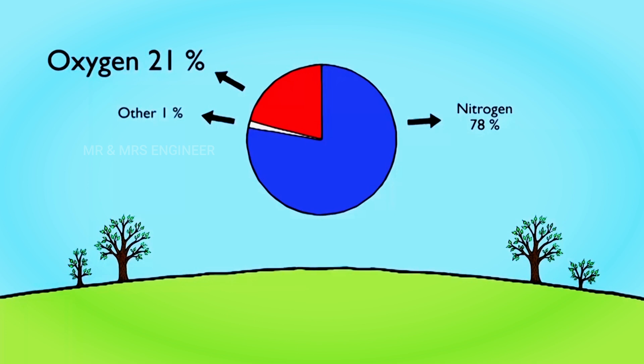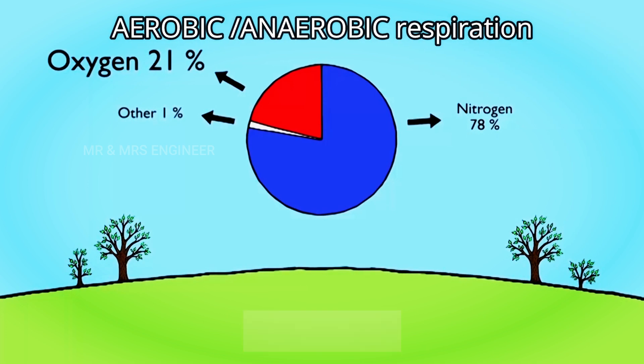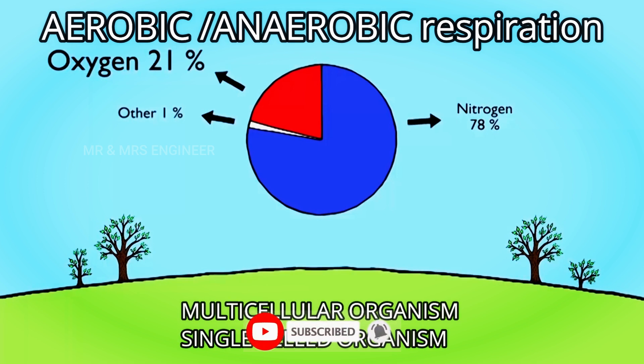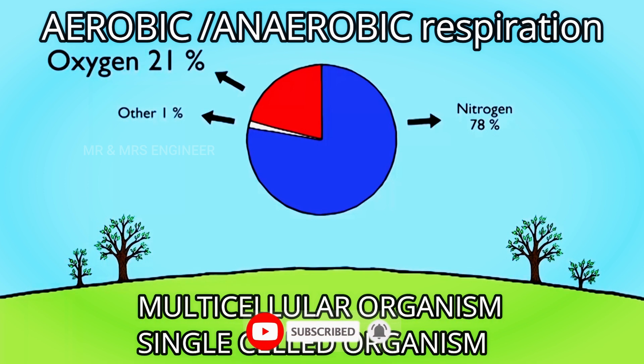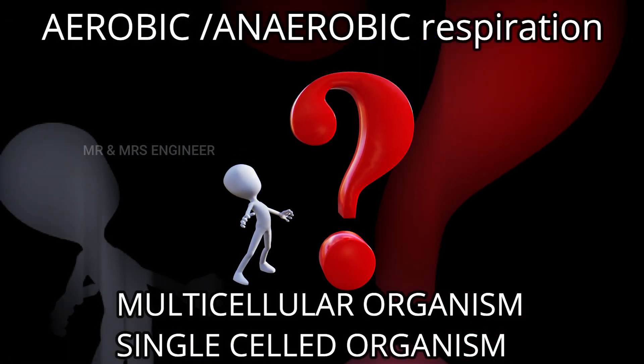If you don't have any oxygen, you can say that it's not anaerobic respiration. If you don't have any oxygen, you can say that it's a multicellular organism, a small cell, a single-celled organism. What do you think about it? If you don't have any information about it, you can tell me. We have no oxygen.